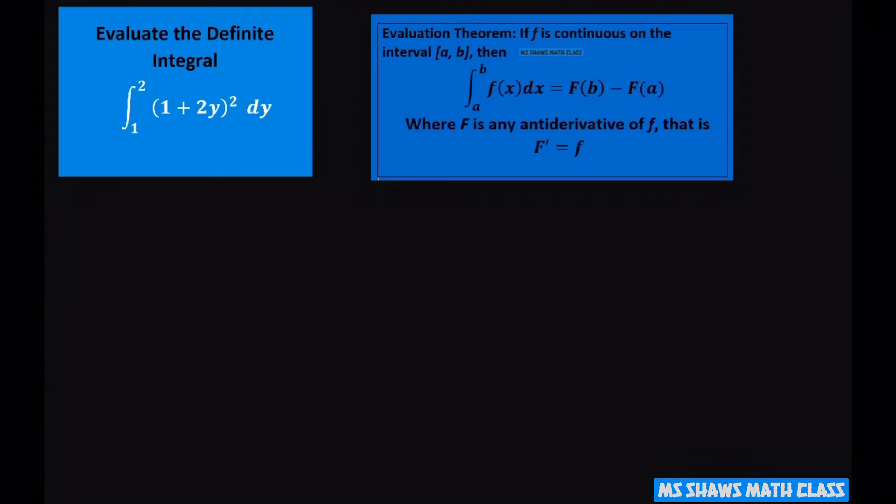So first thing I'm going to do is just expand that a little bit. So when you square this you're going to get 1 plus 4y plus 4y squared dx.